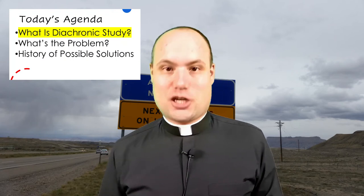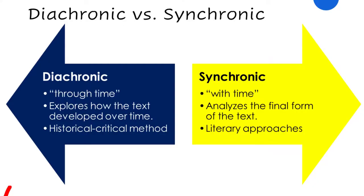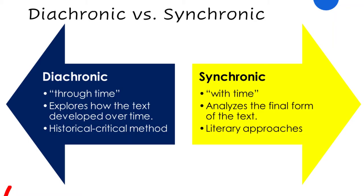Let's delve into the distinction between diachronic and synchronic analysis. Diachronic analysis comes from the Greek dia, meaning 'through,' and chronos, meaning 'time' — through time. Diachronic analysis explores how the text developed over time: how it evolved, how it went from its earliest traditions, perhaps oral traditions or fragments of written literature, from its origins in the remote past, to the final form of the text we have in our Bibles today.